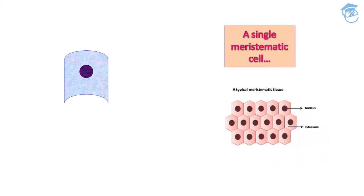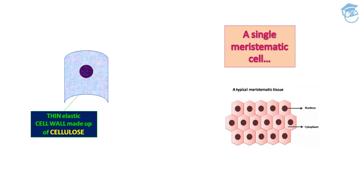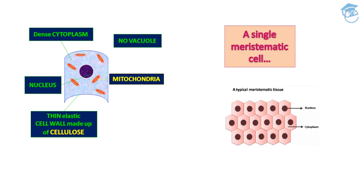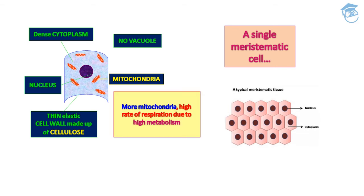A single meristematic cell has a thin elastic cell wall made up of cellulose, conspicuous nuclei, and dense cytoplasm. It has no vacuole. These are the mitochondria, which help meristematic cells to continue cell division and cell repair. More mitochondria means a high rate of respiration due to high metabolism.